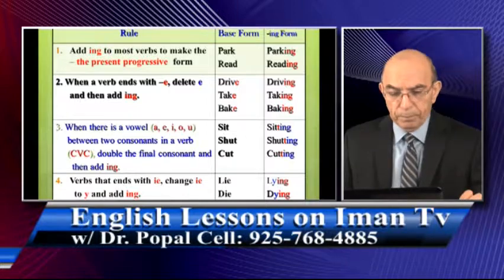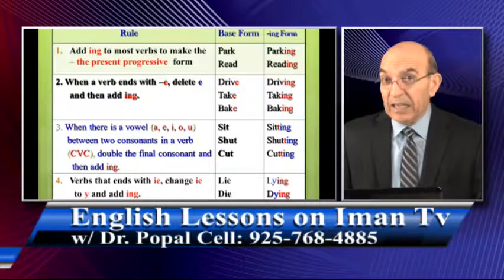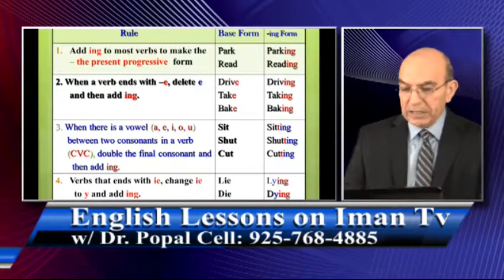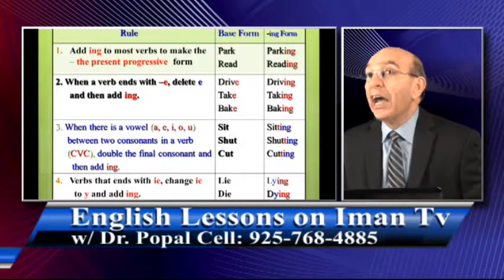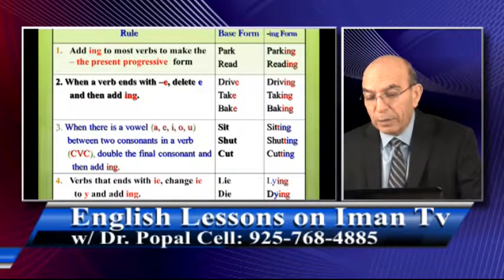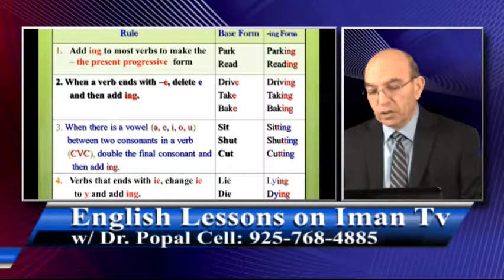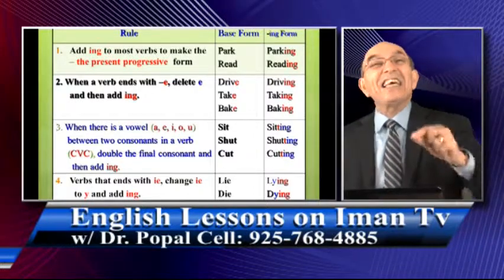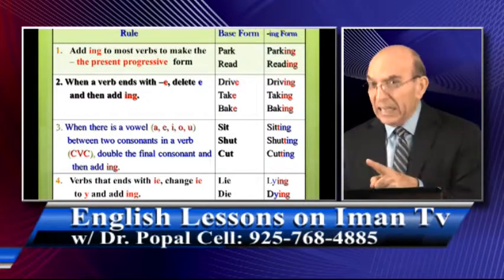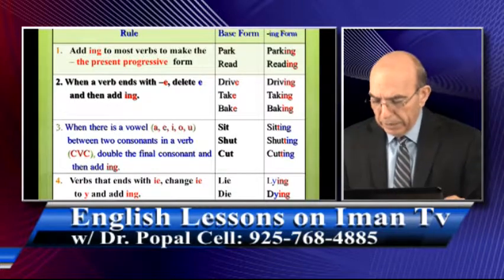Rule number four: verbs that end with '-ie' — when you add '-ing,' change 'ie' to 'y.' For example, 'lie' becomes 'lying.' So you say 'he lies every day' but 'he is lying now.' With 'lying,' you spell it L-Y-I-N-G. And 'die' becomes 'dying' — 'he is dying now' — spelled D-Y-I-N-G. The '-ie' changes to 'y' when you add '-ing.' Keep those rules in mind.